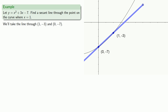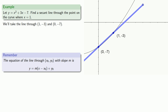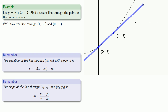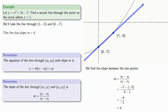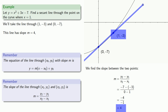The easiest way to write the equation of a line is to know a point and the slope. The equation through point (x₀, y₀) with slope m is y = m(x − x₀) + y₀. The slope between two points is the difference in y-values divided by the difference in x-values. Using our two points, we find the slope is 4. By convention we use the given point (1, −3) and slope 4 to write the equation of the secant line.